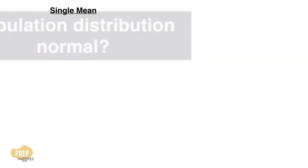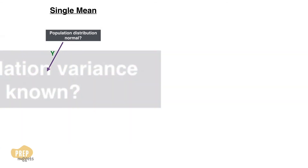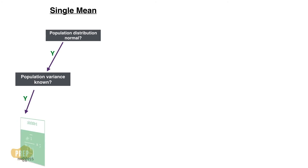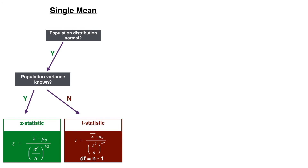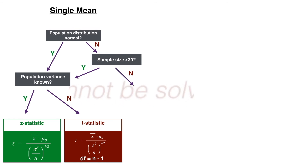In summary, we have gone through different scenarios and the appropriate approaches to perform hypothesis tests concerning the mean. In the case of a single mean, there are three key questions. First, is the population distribution normal? If it is, we need to find out whether the population variance is known. If it is known, we can use the Z statistic. More likely, the population variance is unknown, so we perform a standard t-test with n minus 1 degrees of freedom. If the population distribution is unknown or not normal and the sample size is at least 30, we can approximate the sampling distribution as normal and use either the Z or t-distribution based on whether the variance is known. Otherwise, the problem cannot be solved.